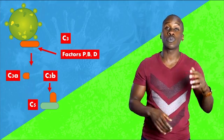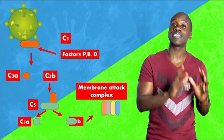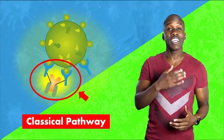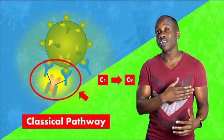So the classical pathway starts with the antigen-antibody complex, which means it's part of the specific immune response. The antibody recognizes a specific antigen and triggers this complement cascade, starting with C1 all the way down to C9.